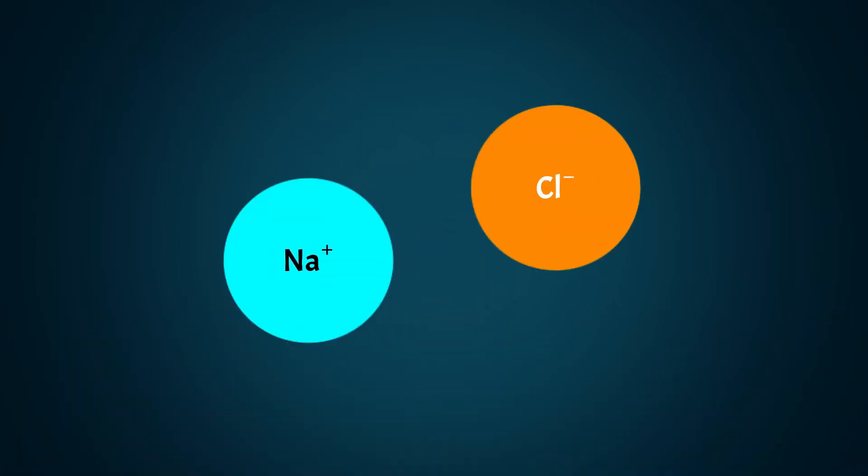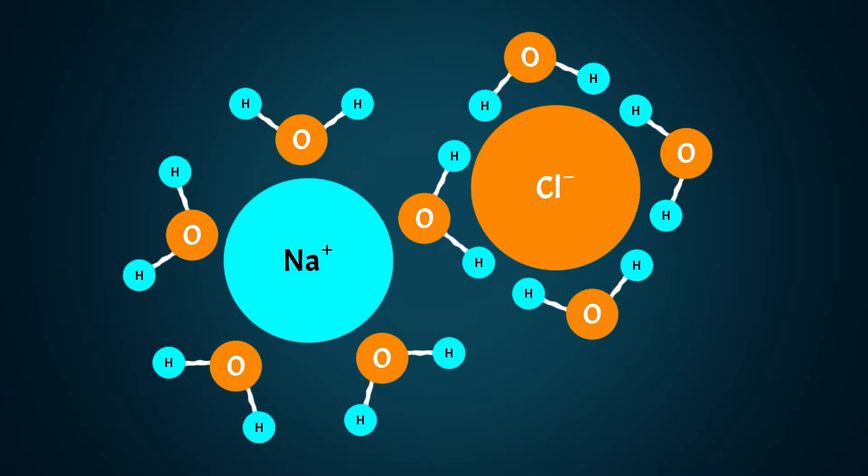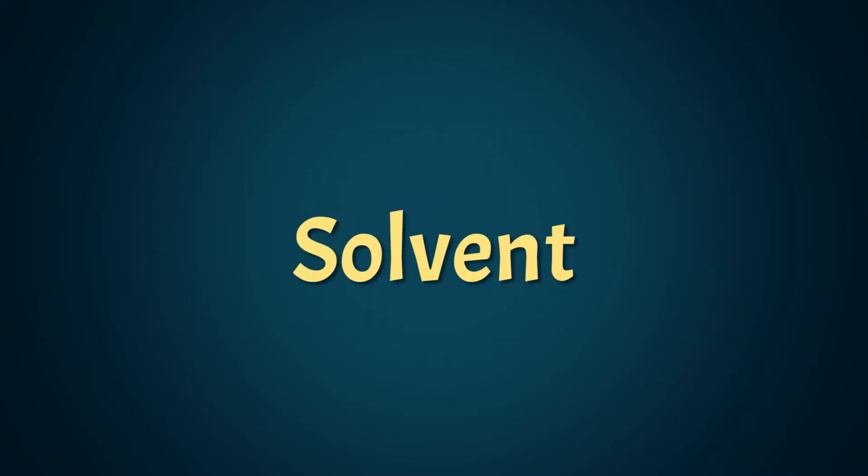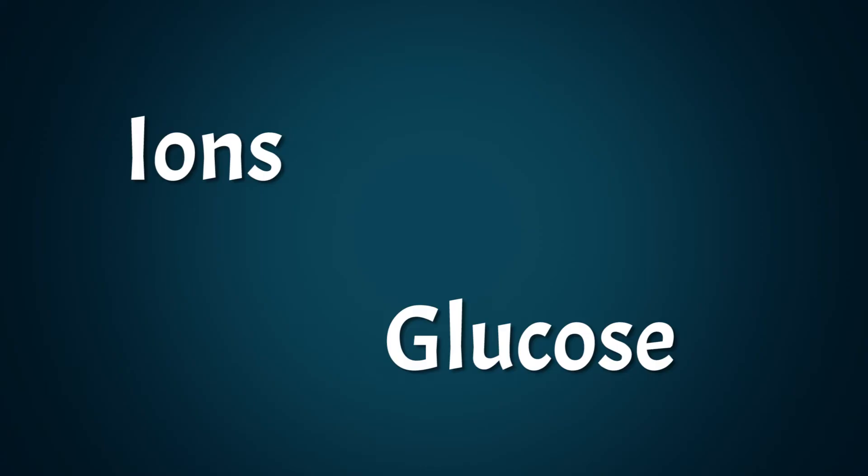the positive sodium ions separate from the negative chlorine ions. This happens in water because of the way the positive and negative sides of water molecules can arrange around the ions. If something can have materials dissolve in it, we call it a solvent. Because of this solvent property, water is a great liquid for transporting essential things like ions and glucose around living organisms.